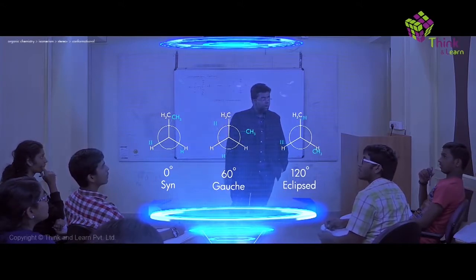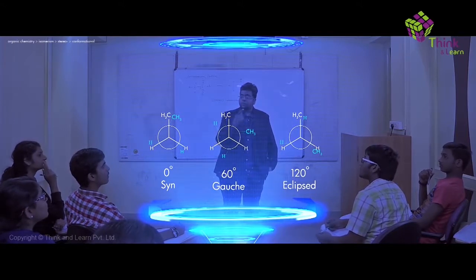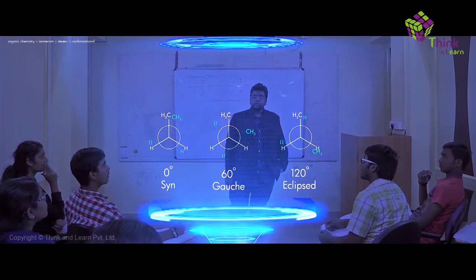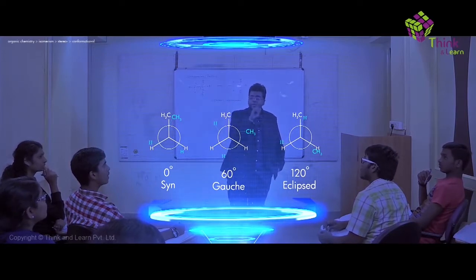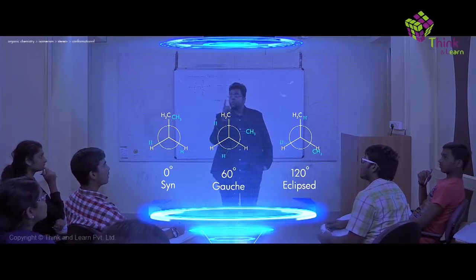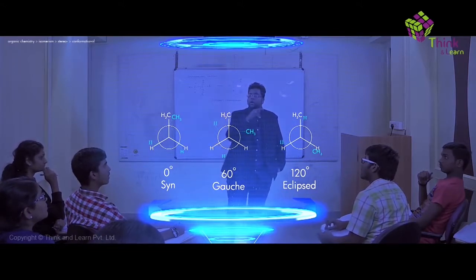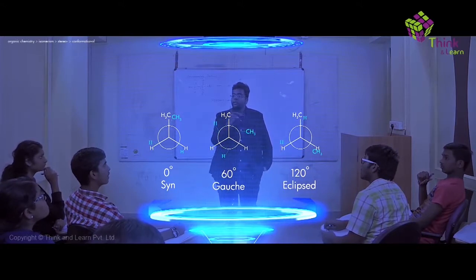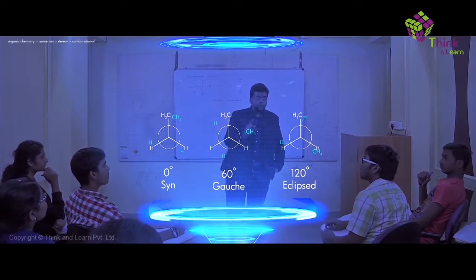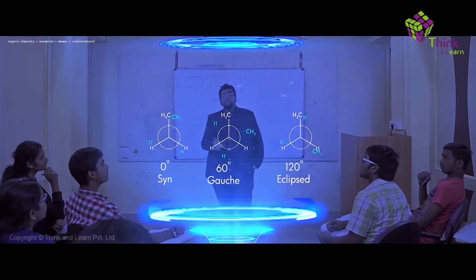If I further move it by 60 degrees, the dihedral angle becomes 120 degrees. At this point it would be called an eclipsed conformation, but this eclipsed is different from the syn conformation, because here CH3 is eclipsing a hydrogen — not CH3 eclipsing CH3. So this is also called eclipsed.